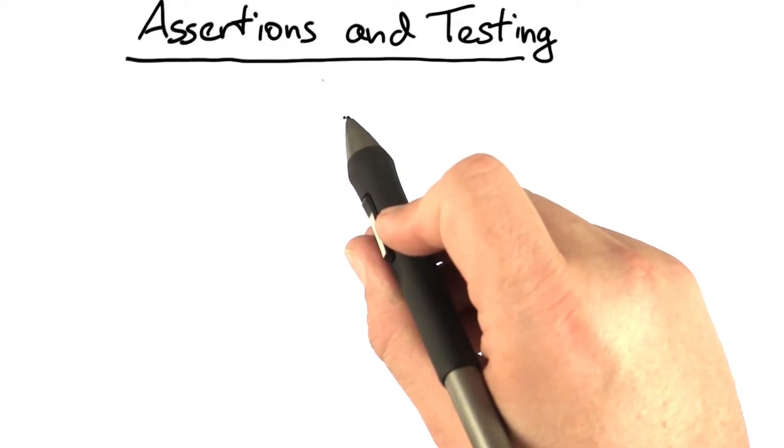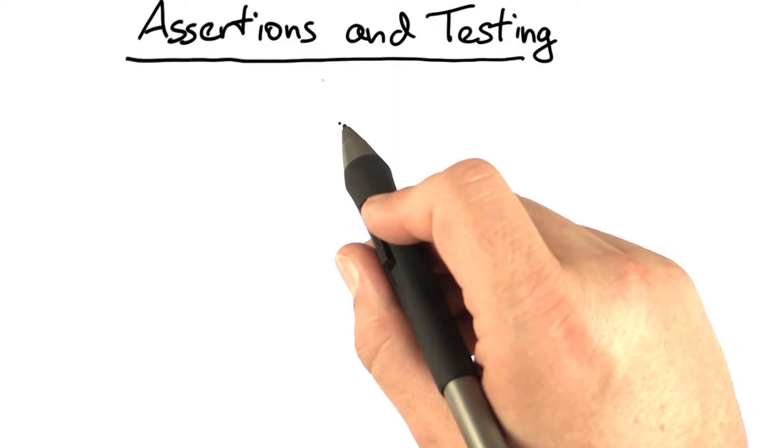If you have assertions in your code, not only can you detect errors much more easily, but you can also test your code much more thoroughly.